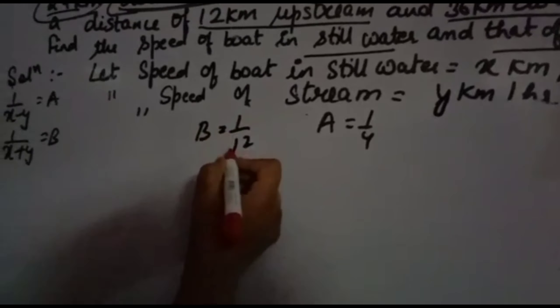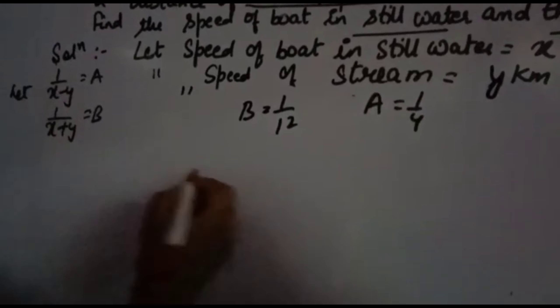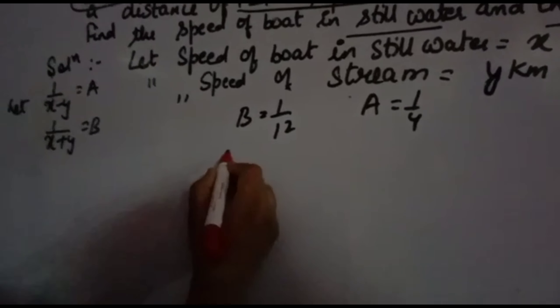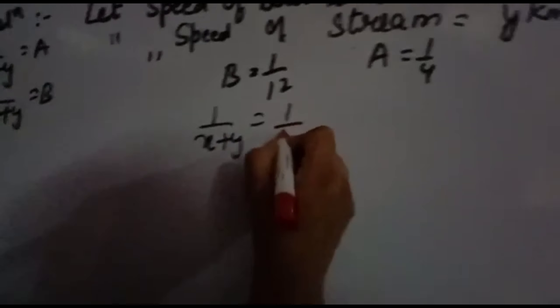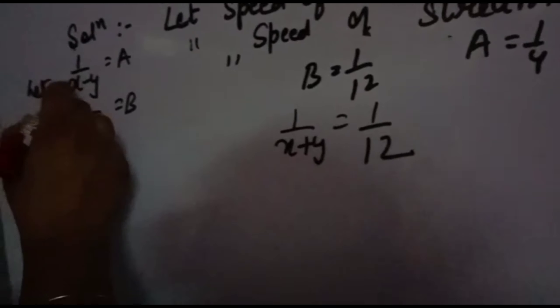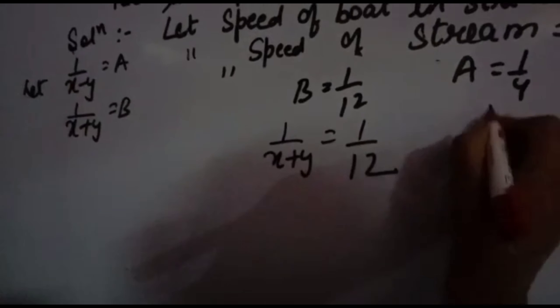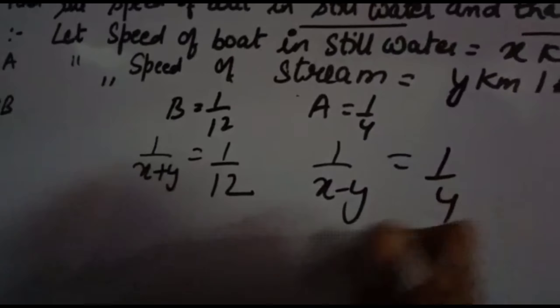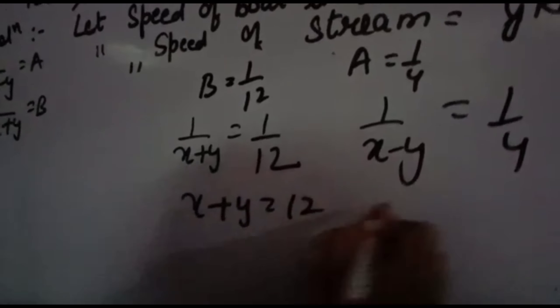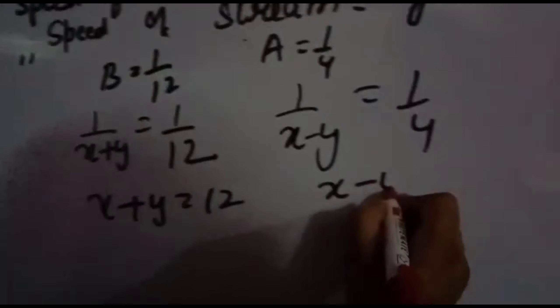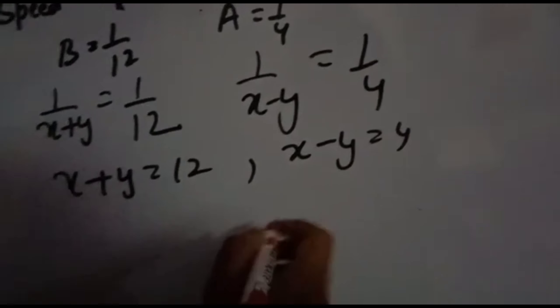Since b equals 1/12 and we assumed 1 over (x plus y) equals b, we get x plus y equals 12. Since a equals 1/4 and we assumed 1 over (x minus y) equals a, we get x minus y equals 4. Now we have two equations in two variables.